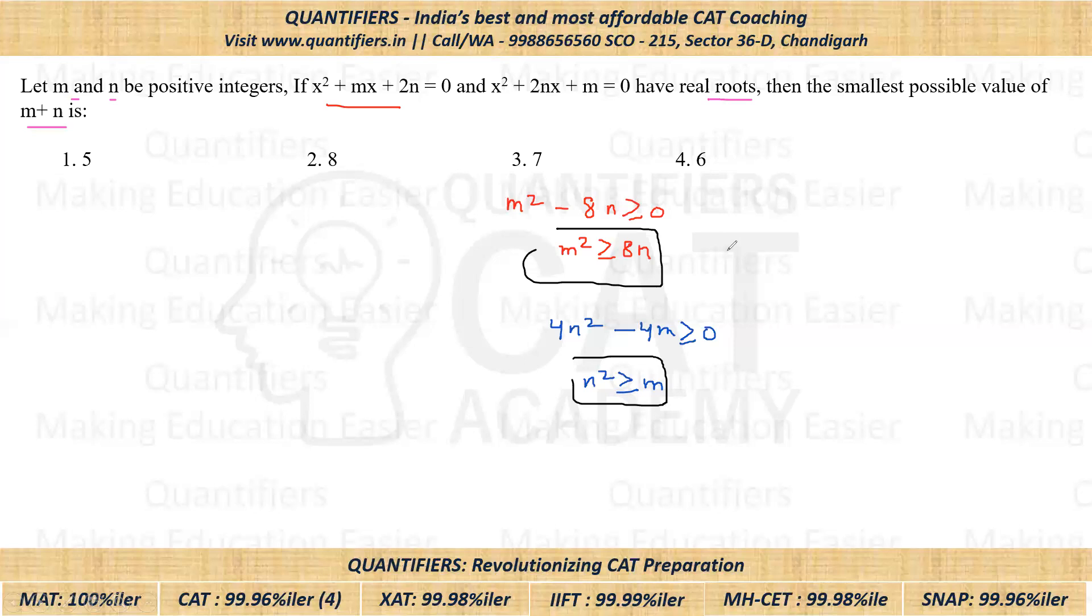So let's take N equals 2. Now students, if I put N equals 2, so M² will be greater than or equal to 16. So that means M's minimum value should be 4.